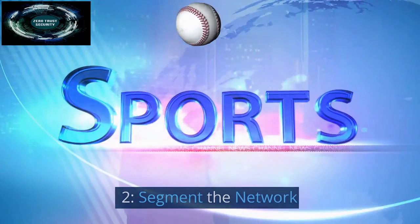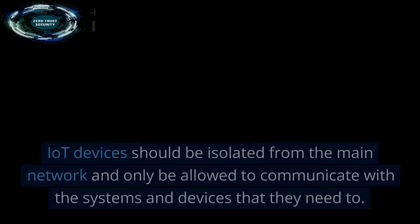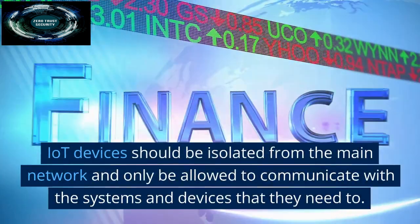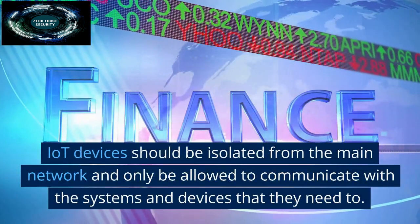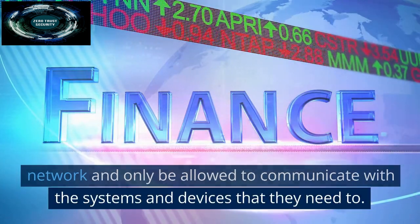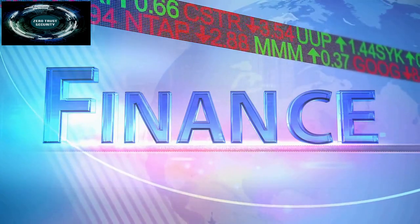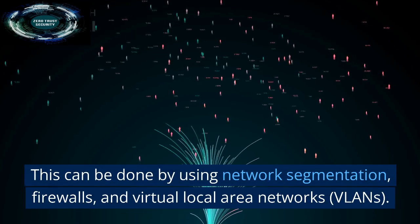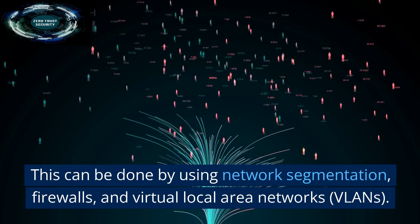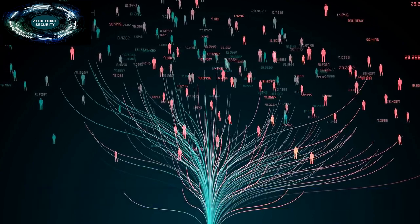Best practice two: Segment the network. IoT devices should be isolated from the main network and only be allowed to communicate with the systems and devices that they need to. This can be done by using network segmentation, firewalls, and virtual local area networks, VLANs.